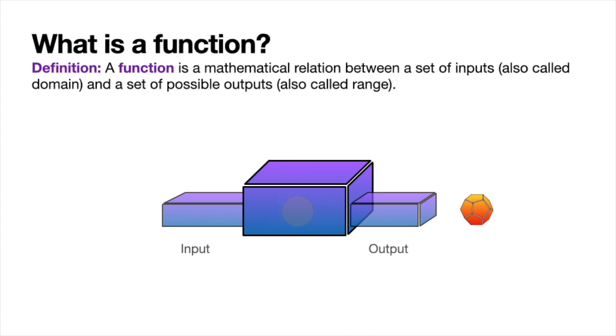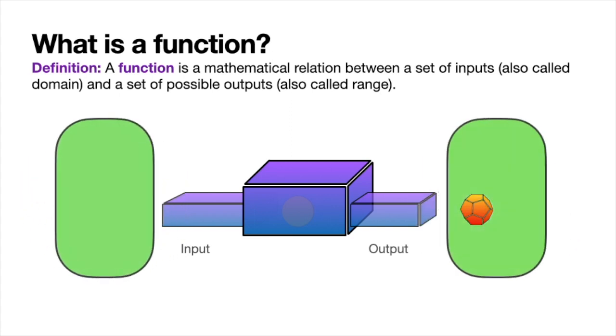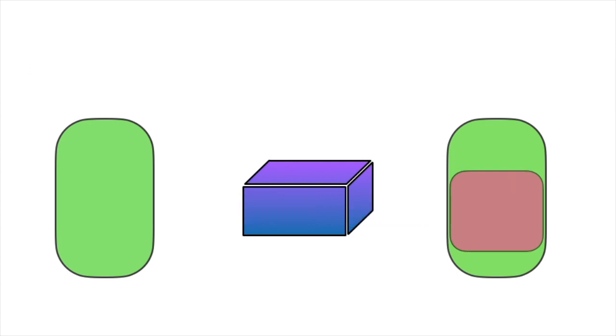When we say the set of inputs, a set is just a thing to refer to a mathematical grouping of certain things. Where our inputs come from, that is referred to as the domain, and the things that the function spits out, that is referred to as the range. You can see that the range is in this green thing called the codomain. We'll talk about that difference in just a second.